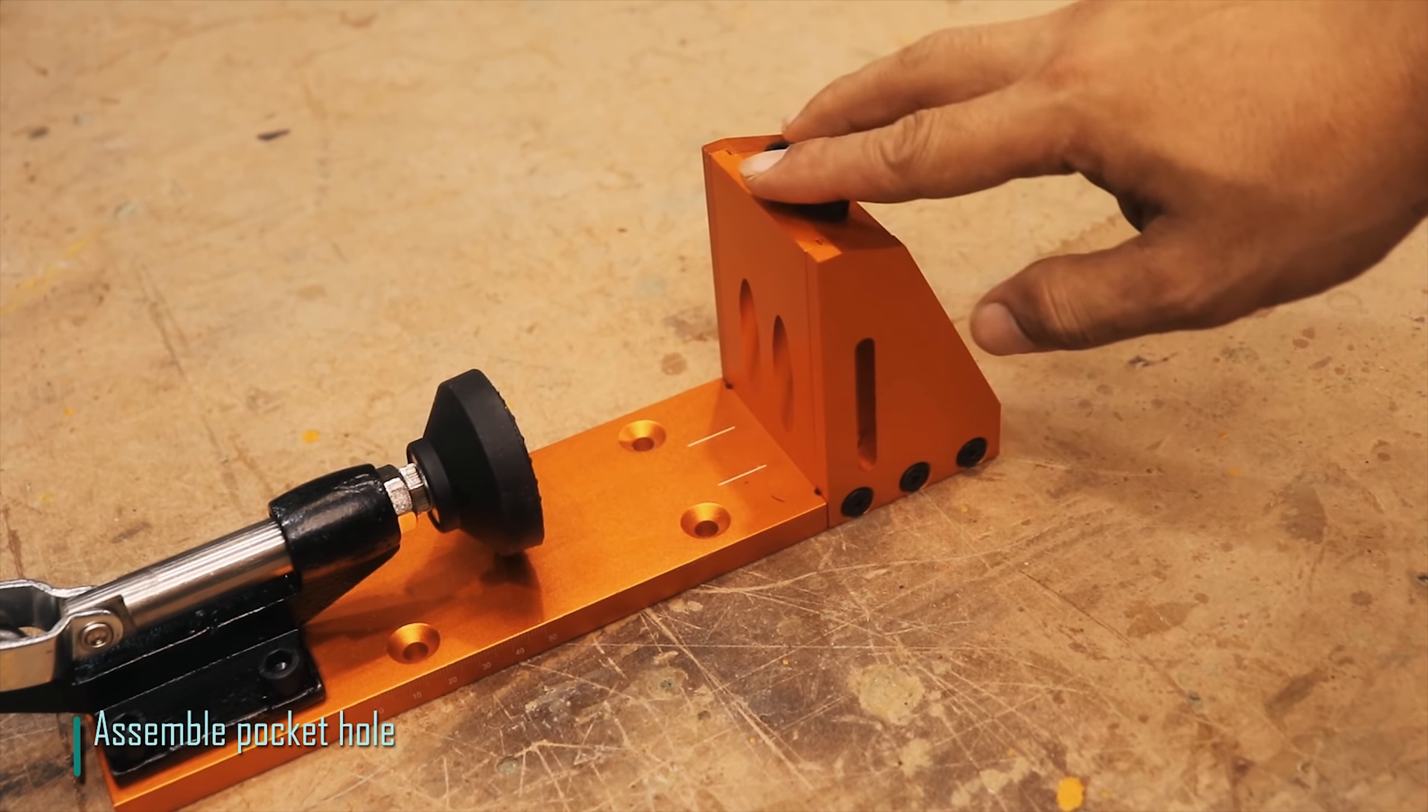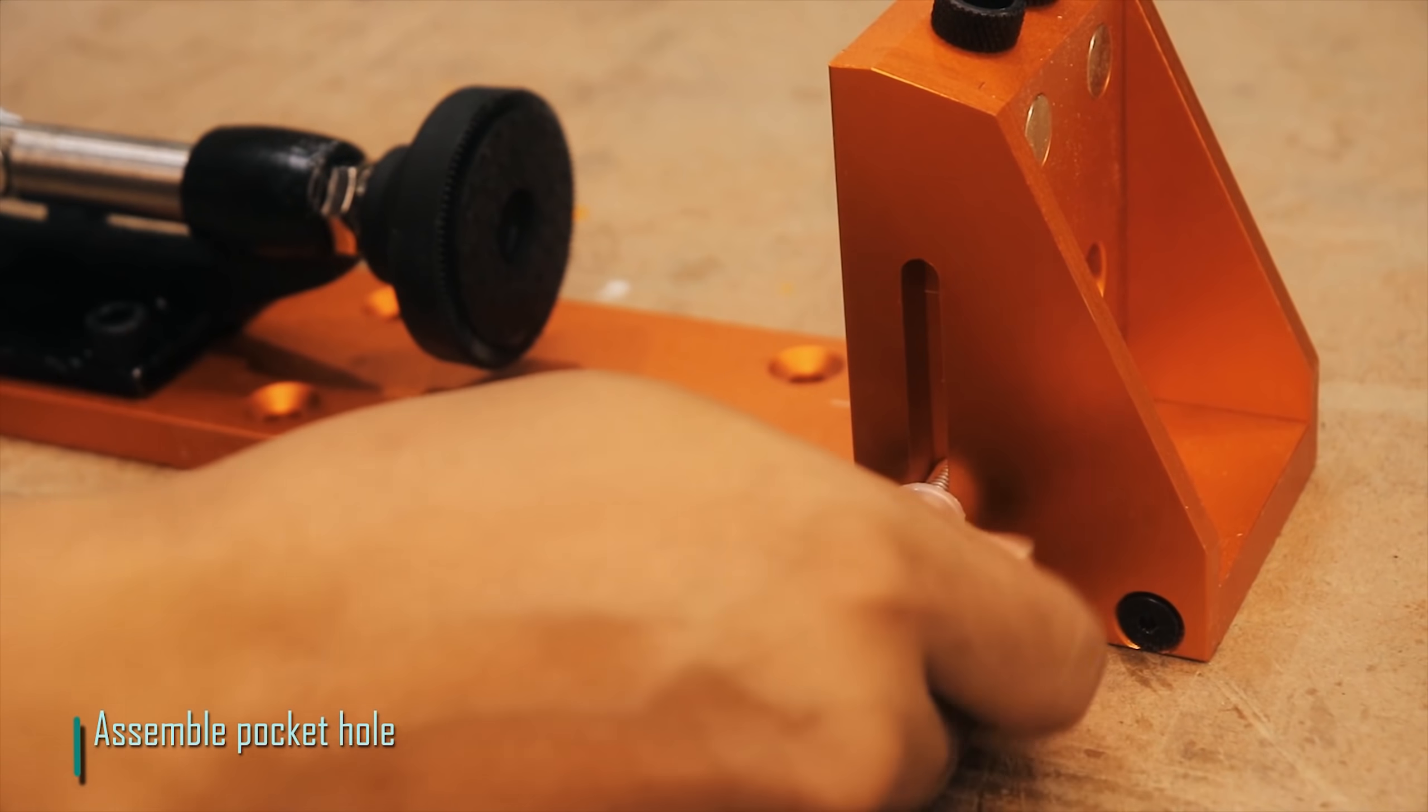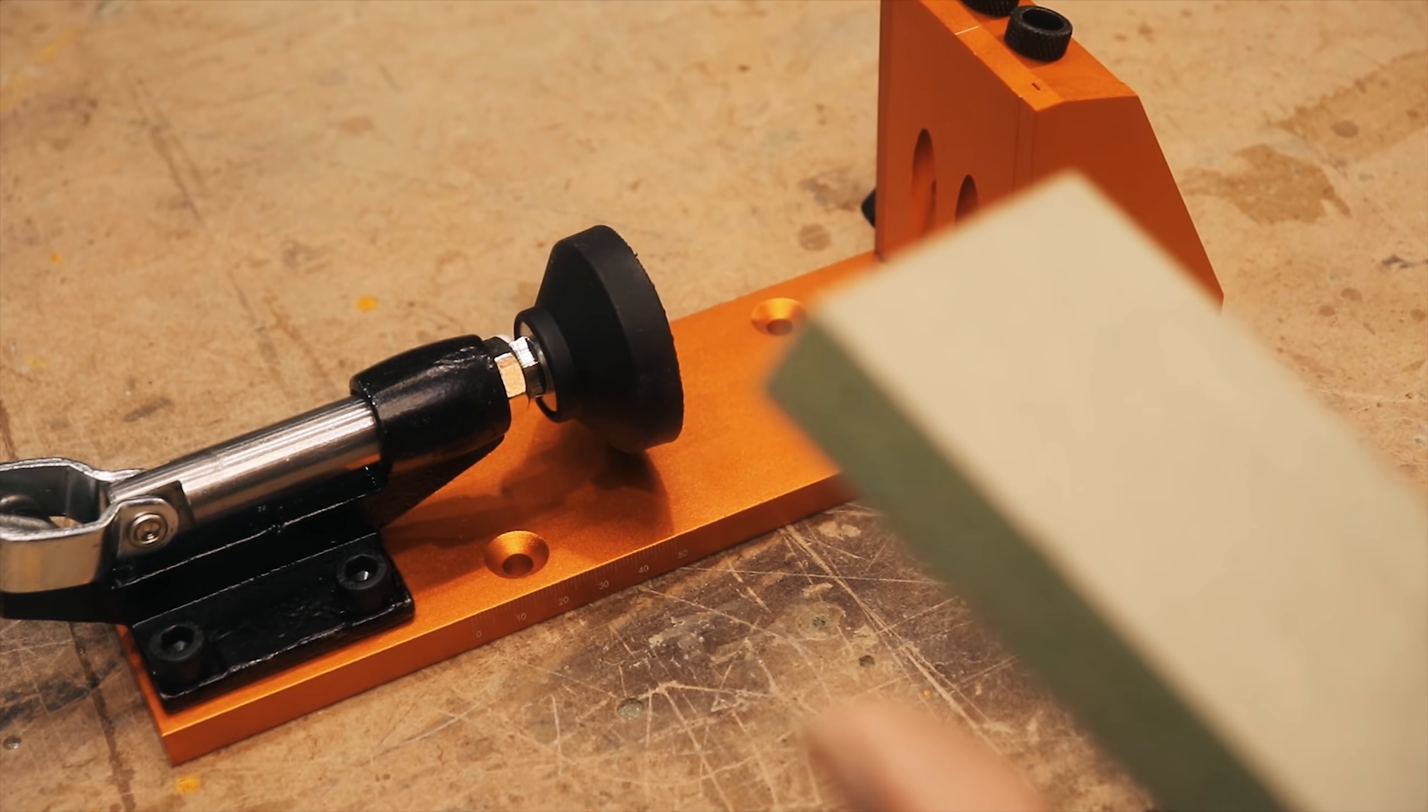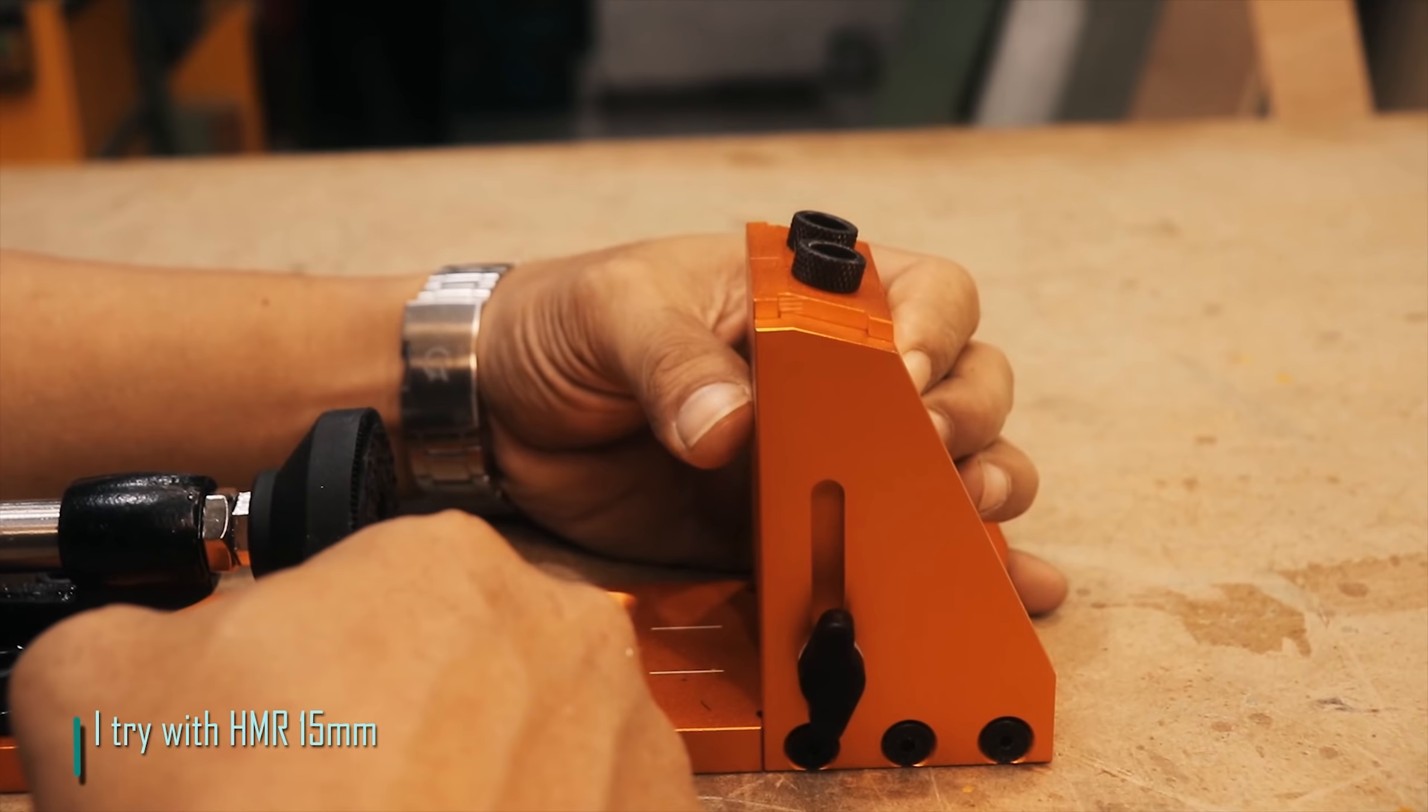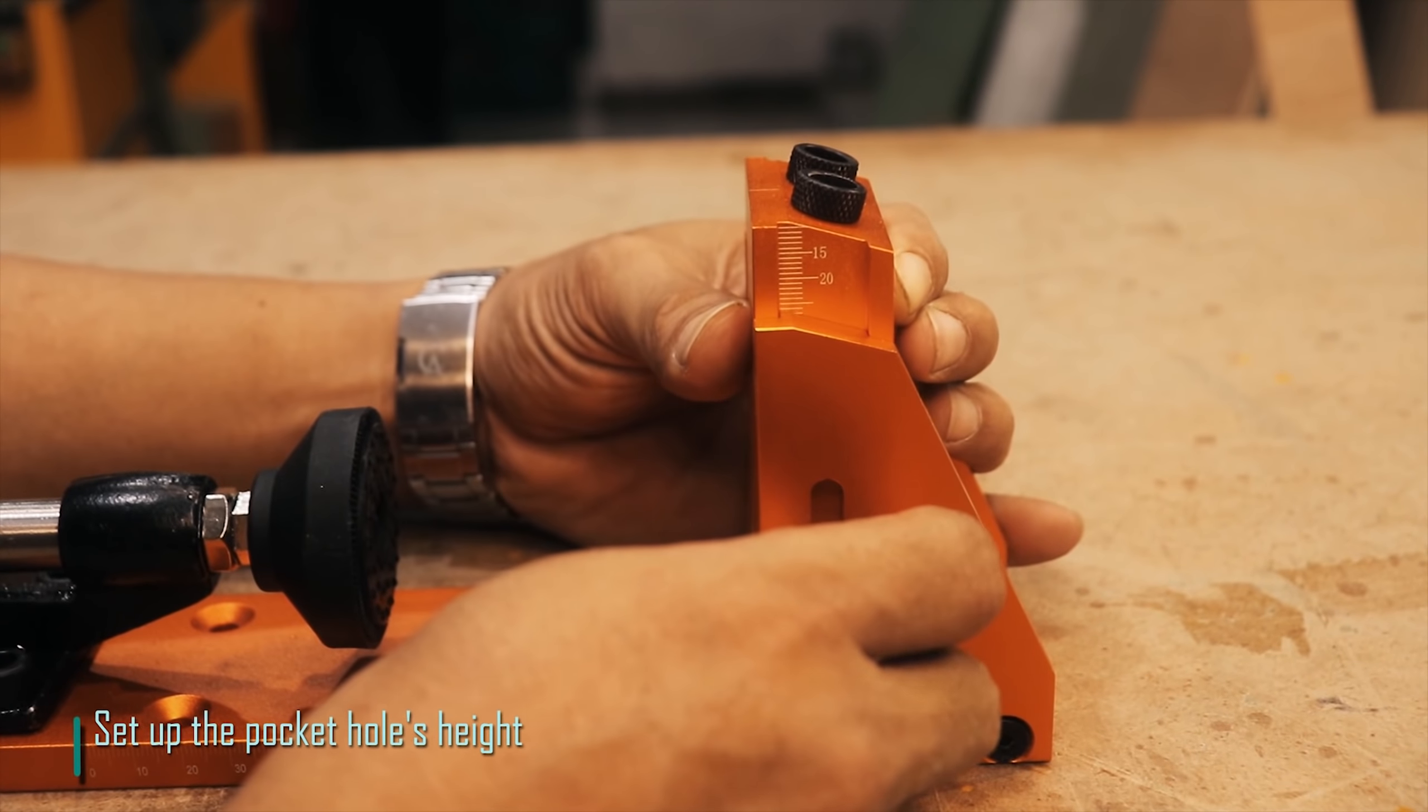Assemble the pocket hole. I'll try with HMR 15mm. Set up the pocket hole's height.